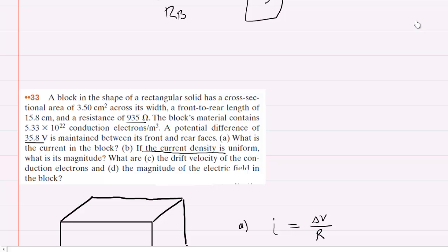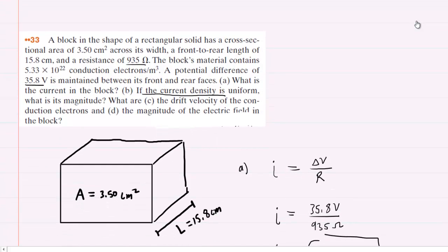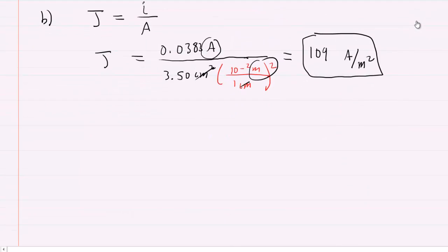We move to part C, which asks us for the drift velocity of the conduction electrons. We have learned in this chapter a relationship between the current density and the drift velocity of these electrons. This is that relationship right here. We're only dealing with magnitudes in this question, we don't have to worry about direction, so we can take off these vector symbols. The question wants this drift speed.